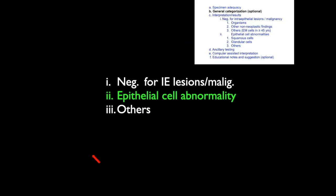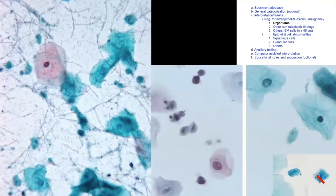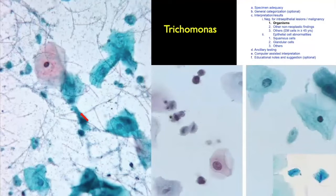General categorization is optional and overlaps with the third component, so we are not using it much — the categories are: negative epithelial cell abnormality and others. Coming to the third component — interpretation — negative for intraepithelial lesion. Let us start with the organisms. These are intermediate cells, and here you can see nice spear-shaped or kite-shaped organisms showing greenish-red granules. Some Chinese-letter-patterned organisms are also present — these are Trichomonas vaginalis. Trichomonas vaginalis usually lives with Leptothrix, so whenever you see Leptothrix, look for Trichomonas.